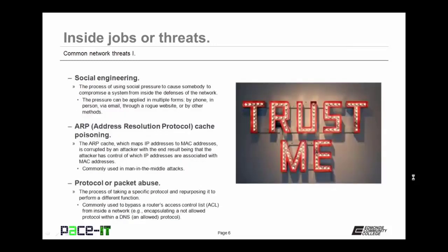Then there is social engineering. This is the process of using social pressure to cause somebody to compromise the system from inside the defenses of the network. Social engineering pressure can be applied in multiple forms. An employee can receive a phone call from somebody claiming to be from the IT department asking for their credentials. It may occur in person, through email, or through a rogue website. There are many avenues in which social engineering can occur. The best defense is through end user education.